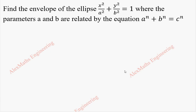Hi students, this is Alex here. In this video we are going to find the envelope of the ellipse whose equation is x squared by a squared plus y squared by b squared equal to 1, where a and b are the parameters related by the equation a power n plus b power n equal to c power n.